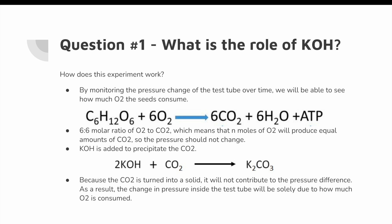So in theory, the pressure should not change. But when we add KOH to this reaction, we get 2KOH + CO2 turning into K2CO3. The added KOH reacts with the CO2 produced by the plants, giving us K2CO3, which is a precipitate — a solid. Because it is converted into this K2CO3 solid, it won't contribute to the pressure difference. As a result, the change in pressure inside the test tube will be solely due to how much O2 is consumed.